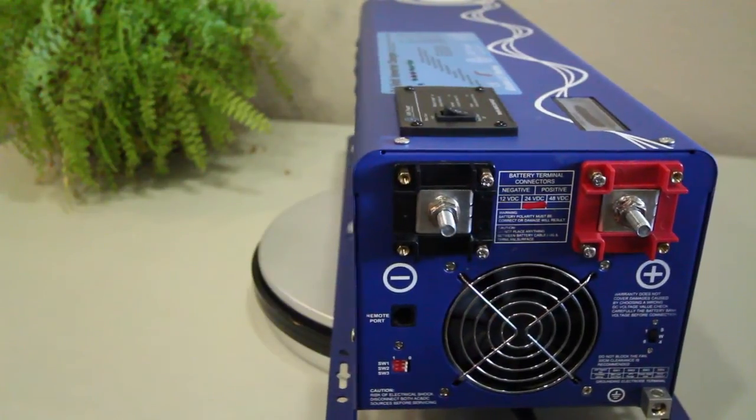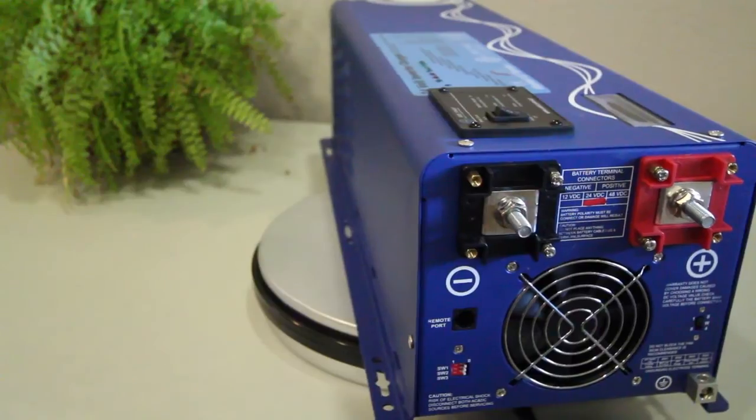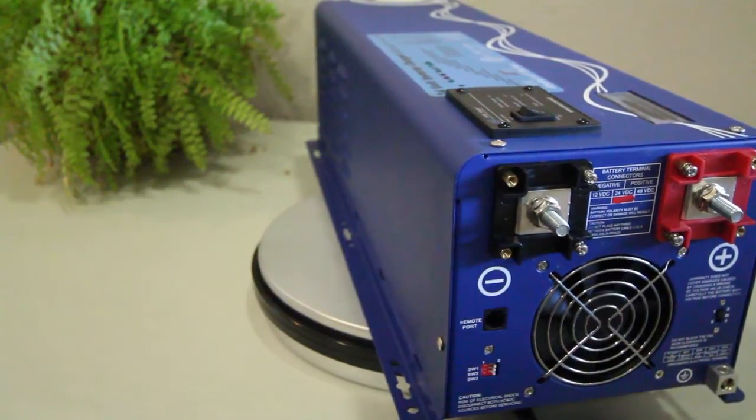You can see the inverter's positive and negative DC terminals here, which again connect to a 24 volt battery bank. We recommend using 4 gauge cabling when making this connection.